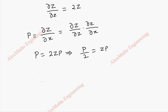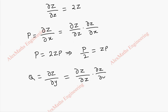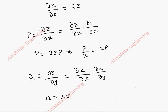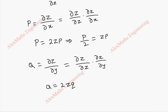In the same way, when we take capital Q, which is dou capital Z by dou y, this can be rewritten as dou Z by dou small z, into dou small z by dou y. Now Q will be 2z — and dou z by dou y we have taken as small q. So from this, Q divided by 2 equals z·q.